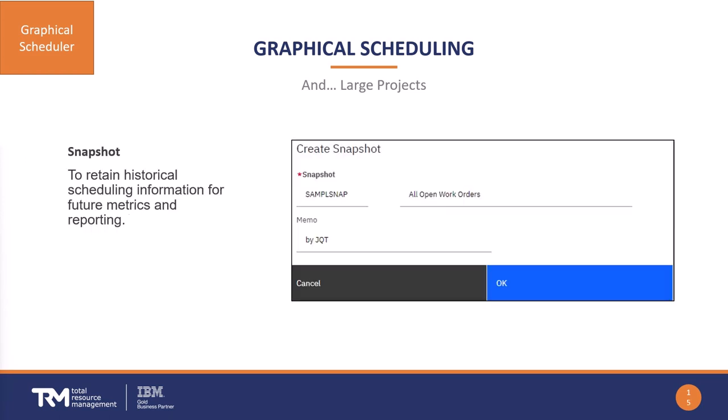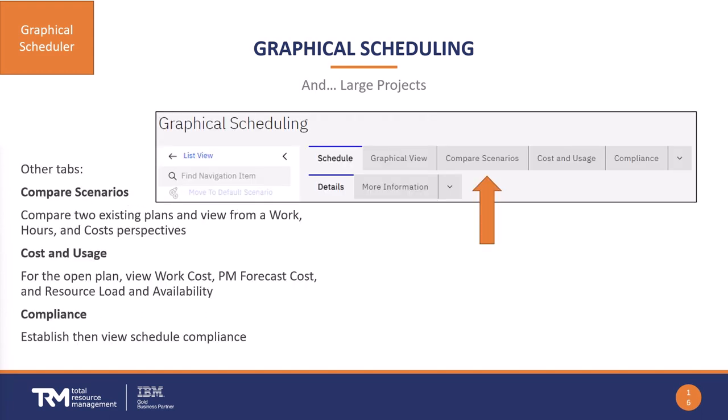If you want to do comparisons or save a particular point in time, there's an action called 'create snapshot' that does exactly that. It takes a snapshot of your schedule — essentially creating another schedule in the system — which you can use as a baseline and then edit your schedules beyond that point, comparing and contrasting between the two. It's a very useful function for saving history.